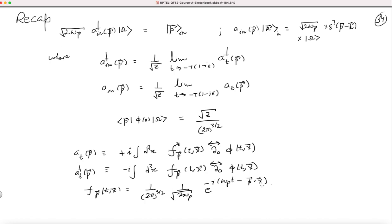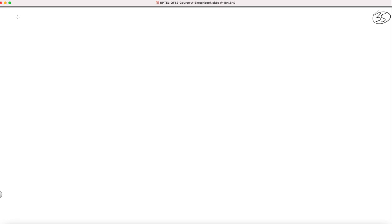That is all we have done so far. Remember, in the treatment I am following I am not being super careful, but if you want to be very careful you should define these in-states by folding them with appropriate functions, so that when you evolve the state backwards in time with the Schrödinger equation you end up with a particle which is fairly localized in space and has a fairly well-defined momentum. I will proceed without those folding functions and the conclusions will be the same.